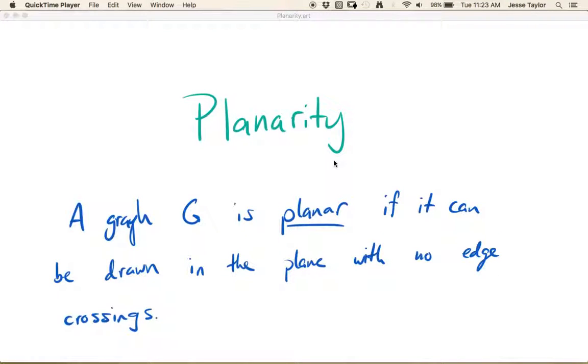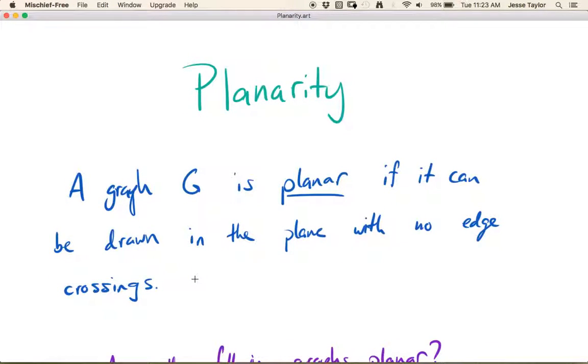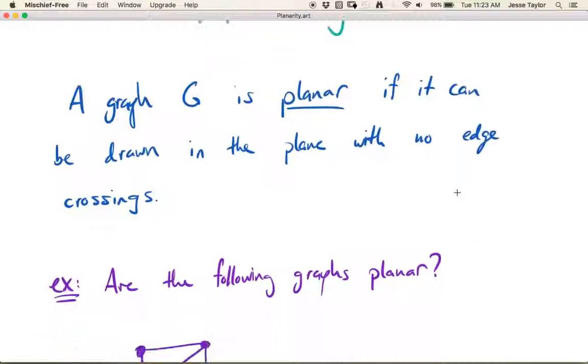In this video we're going to be talking about planarity, and specifically what it means for a graph to be planar. A graph G is planar if it can be drawn in the plane with no edge crossings. Note that the key word here is CAN, not that it IS drawn in the plane. Let's look at a couple examples of this.